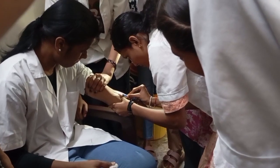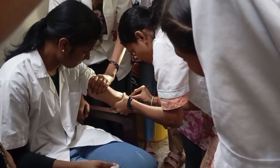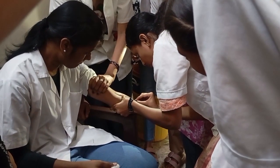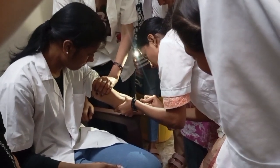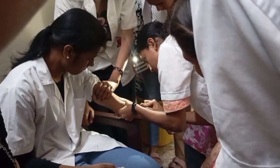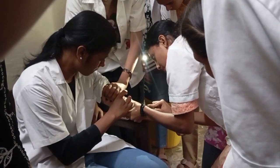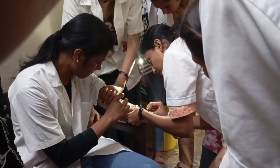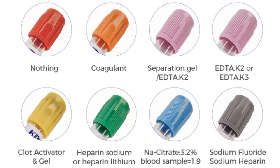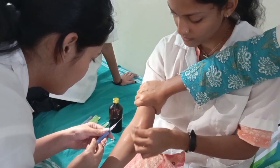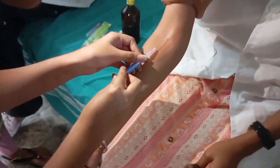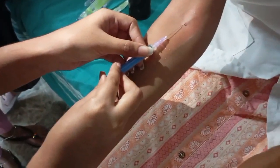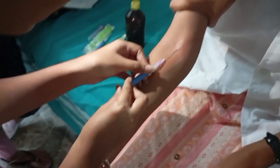For different diseases, we need different tubes. The blue tube helps detect clotting problems. Red or yellow tubes are used for tests like liver, kidney, sugar, and thyroid. The purple tube is used to check hemoglobin and platelets, which helps diagnose anemia and infection. And the gray tube keeps glucose stable for diabetes testing.